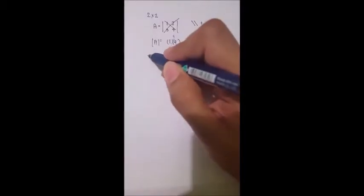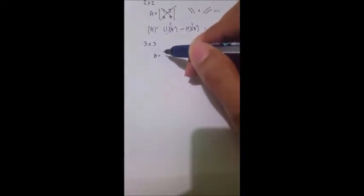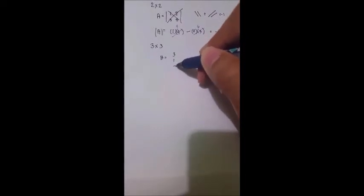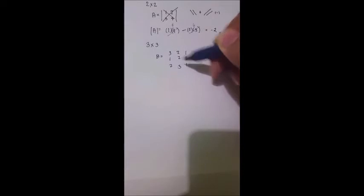For example, we have a 3 by 3 matrix. Determinant B. We have 3, 1, 2, 2, 2, 3, 1, 3, 1.